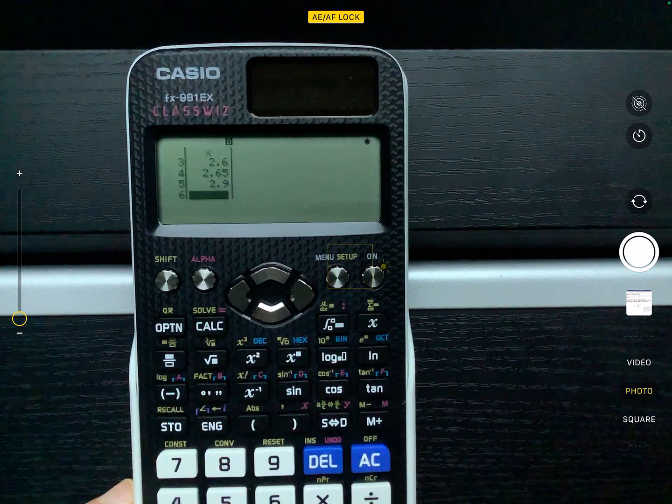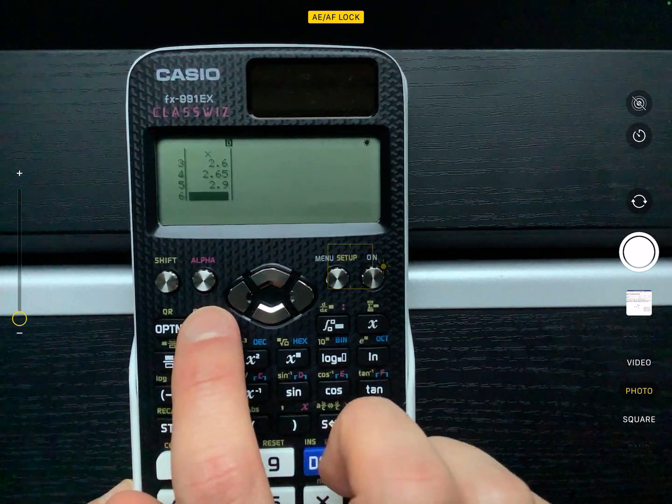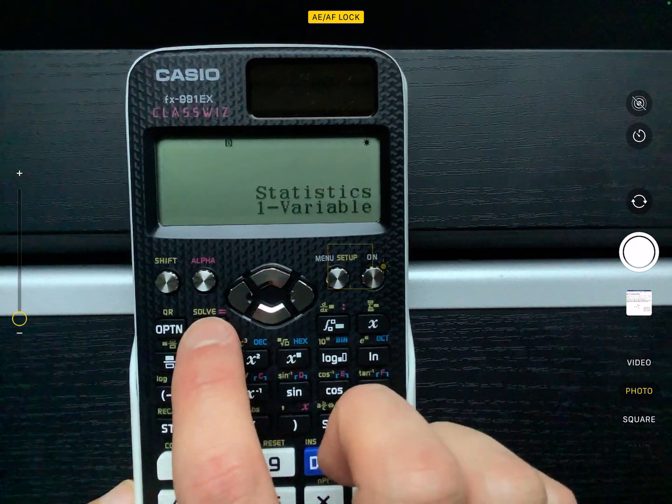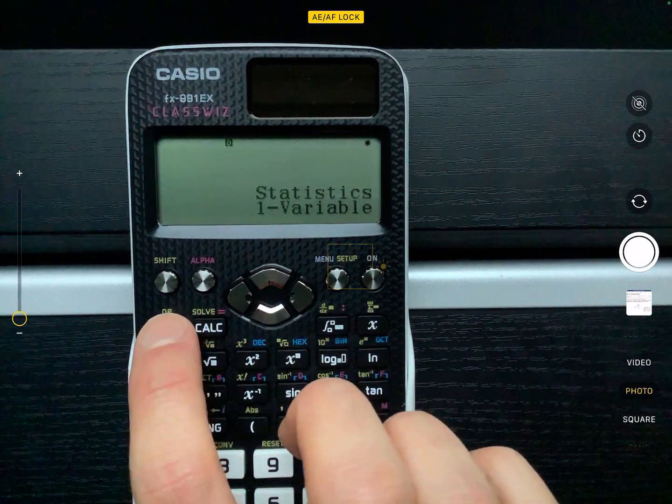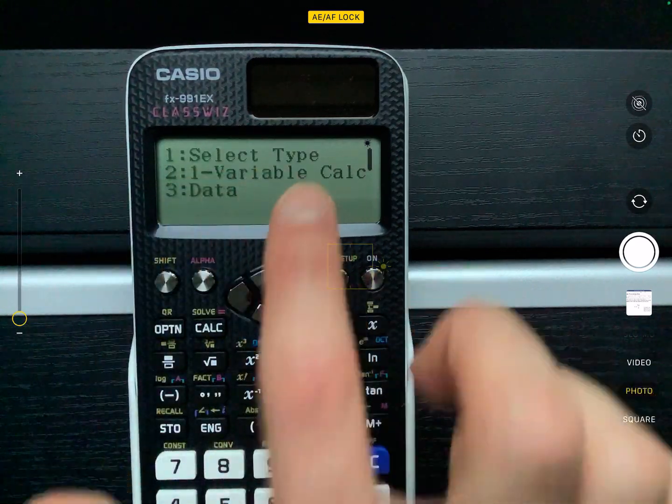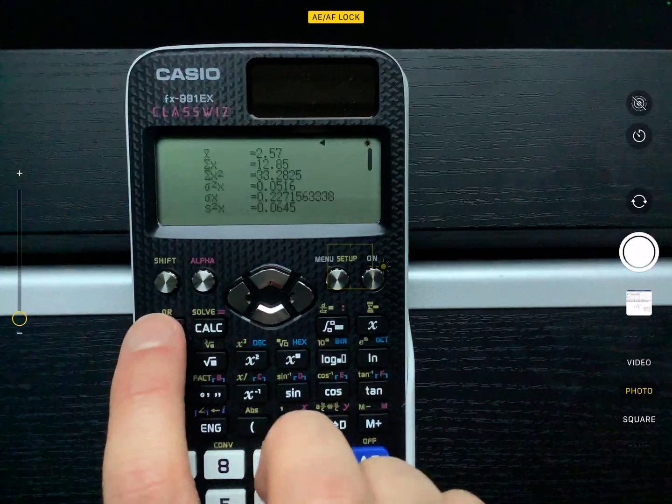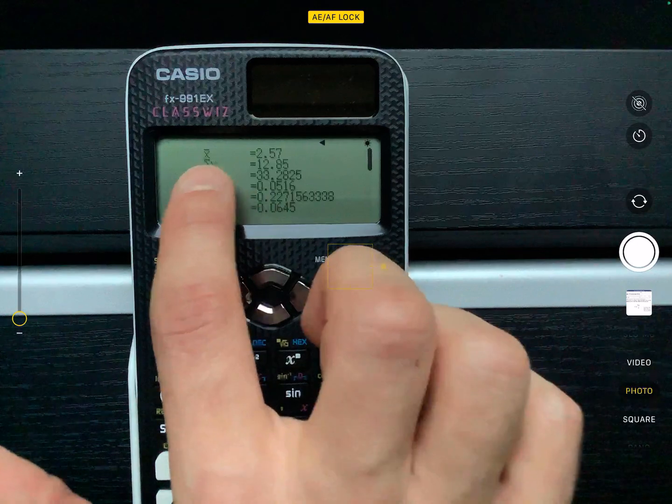When you've got to that stage now, you can just press the calculate button. So the calculate button is going to then give you the options. Oh, hang on a second. You have to press AC first. Then you press options. My apologies. And then you press one variable calculations. So it's option and then number two for one variables.